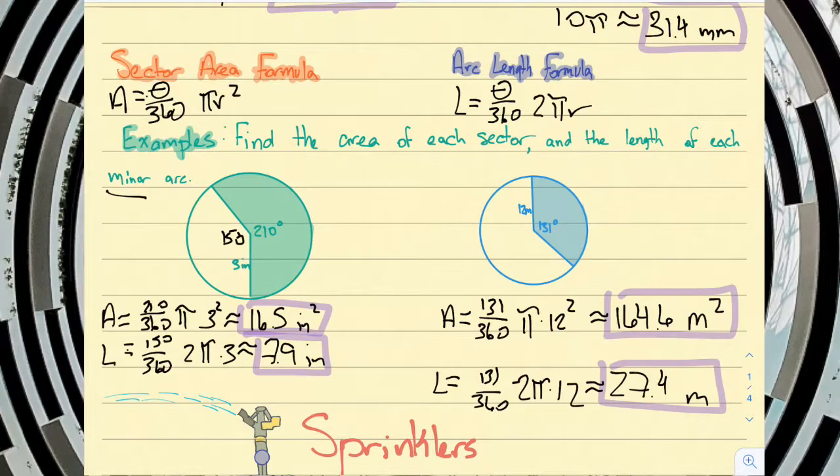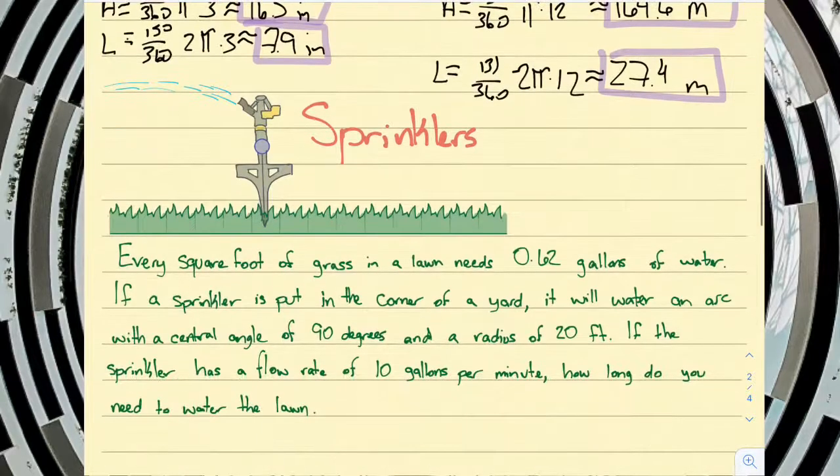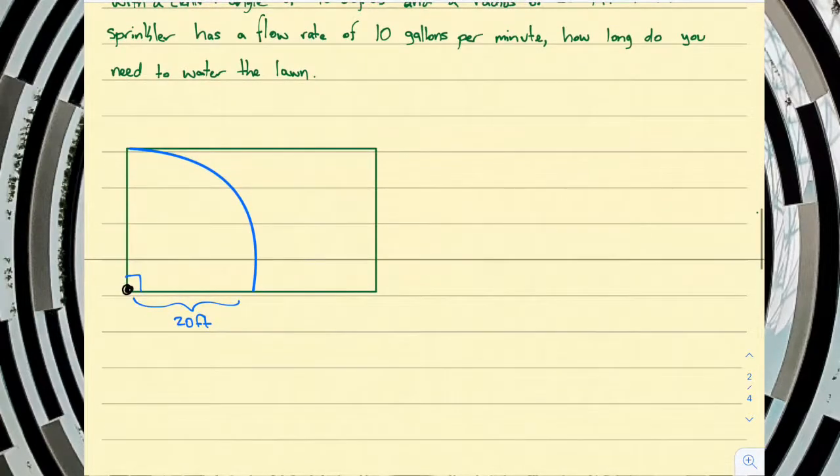All right, now one place that we can actually use this in the real world is figuring out how long you need to water your lawn. I take good pride in how green my lawn looks in the middle of summer and in the early spring. So, every square foot of grass in your lawn needs about 0.62 gallons of water just to keep it healthy, probably about once or twice a week. So, if a sprinkler, you put that in the corner of your yard, you can make it arc out a 90-degree arc, and it has a radius of 20 feet. I want to figure out how long we need to water our lawn. Now, we can assume that our sprinkler has a flow rate of 10 gallons per minute. So, here's our arc.